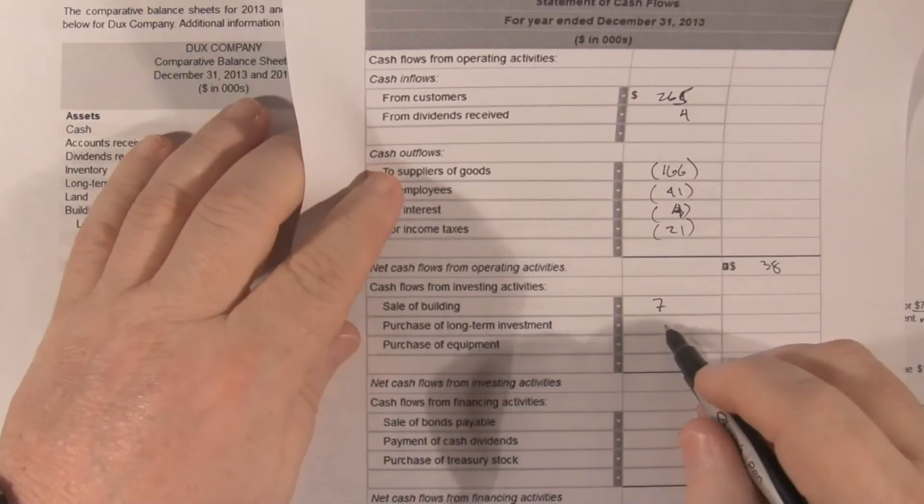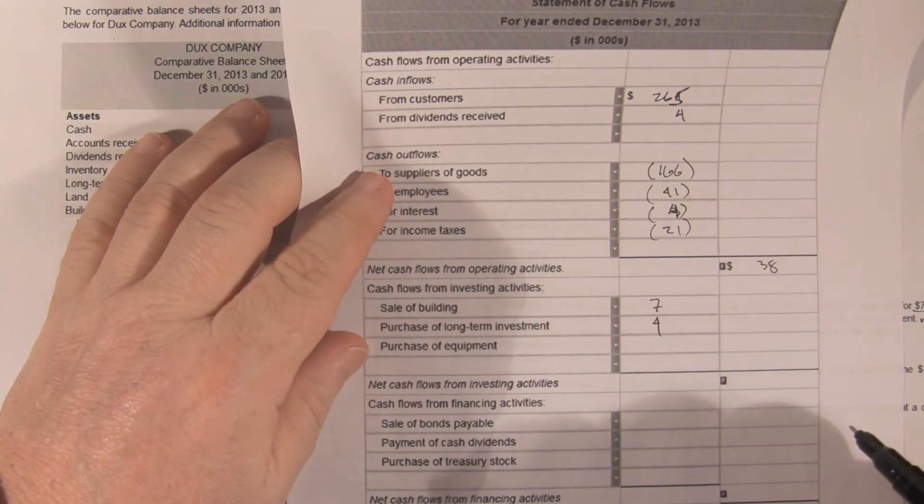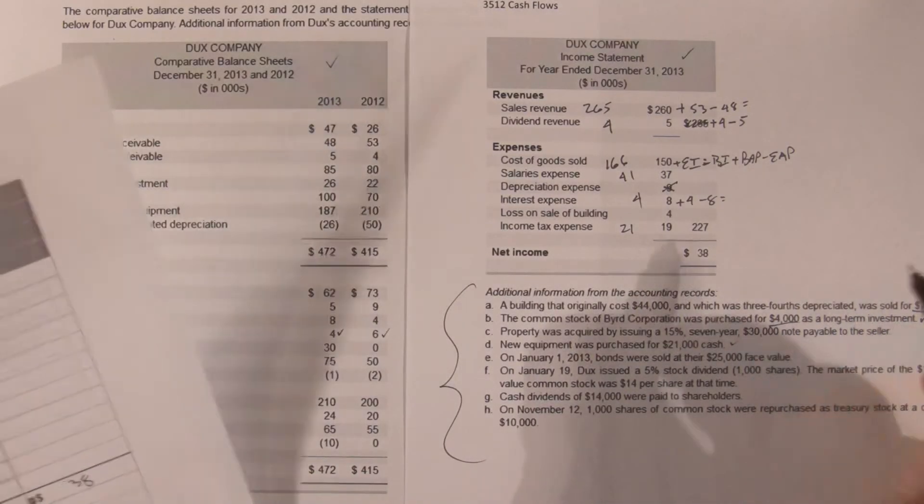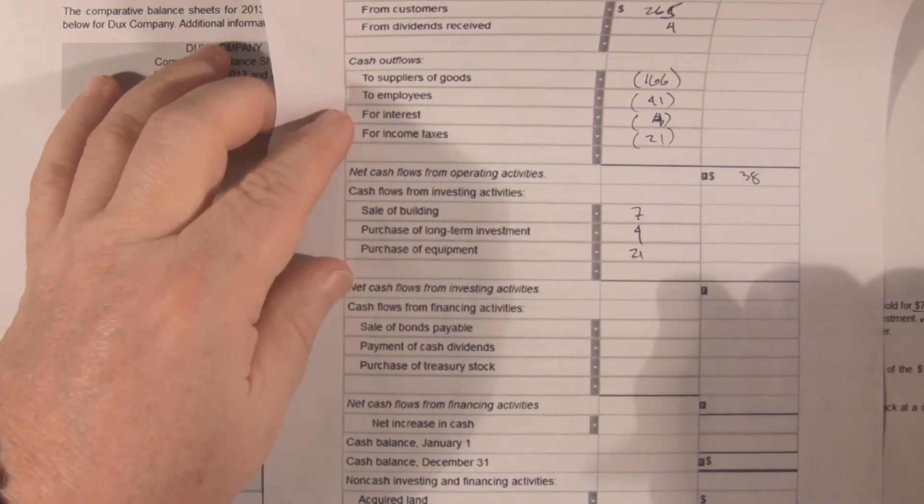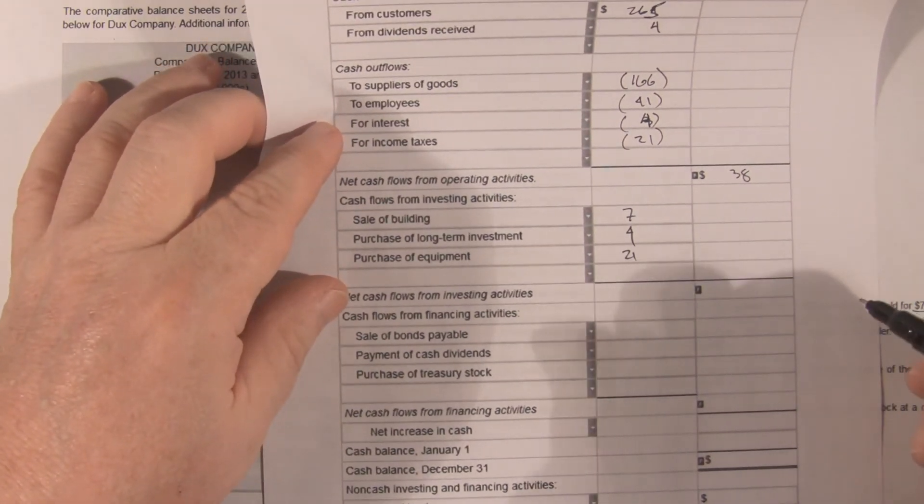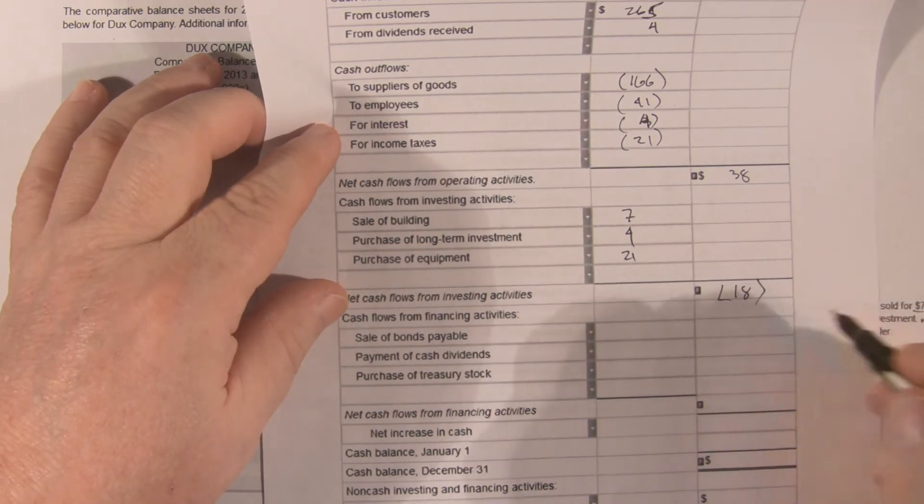We purchased this long-term investment of 4,000, cash, 4,000. Purchase of equipment, they just flat out tell us, 21,000. So our total cash out for investing activities was 18.